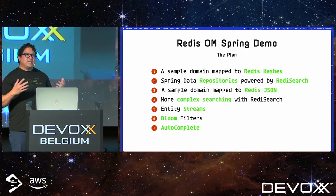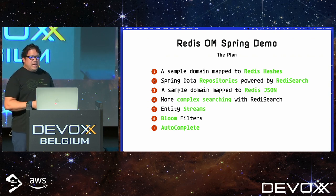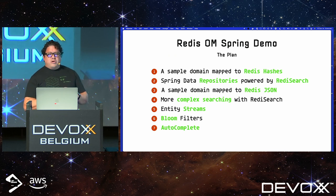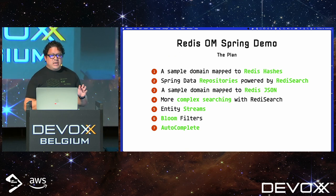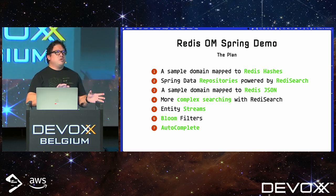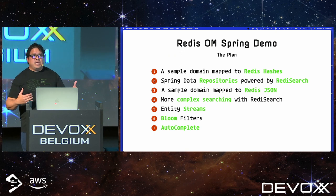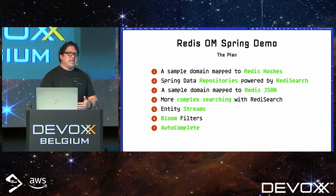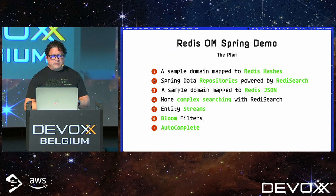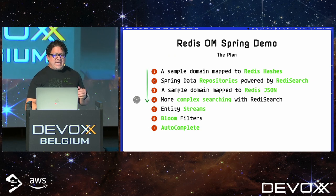Today it's mostly about demoing what I've built. We're going to do a simple demo of mapping objects to hashes, repositories in Spring to search over those hashes, then move on to the more complex JSON data type with more complex searching, then work with an API that looks like the Java Streams API for querying JSON and hash objects in Redis.